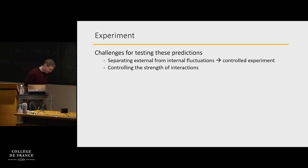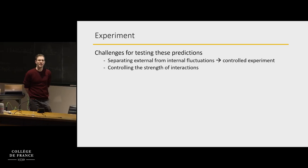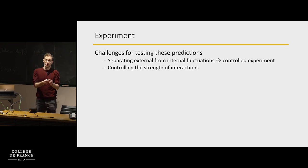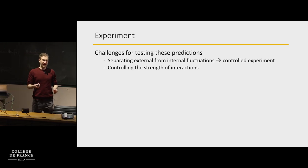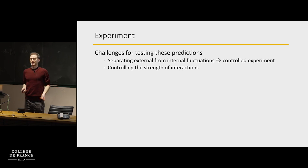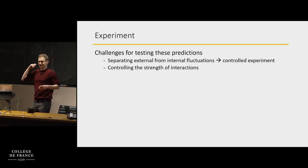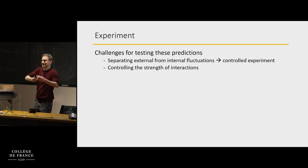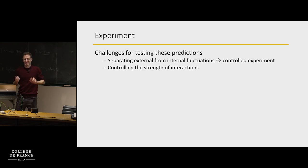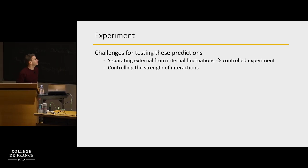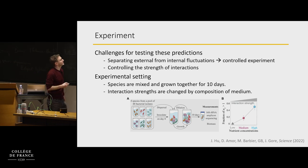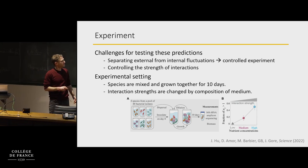Also, I kept talking about changing the strength of the interactions — but how do you control the strength of interactions? How do you make a lion eat the gazelles more? That's not so natural to think about. An experimental setting where this was done is work from Jeff Gore's lab at MIT.